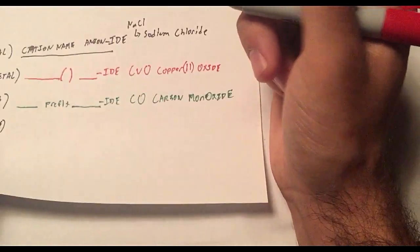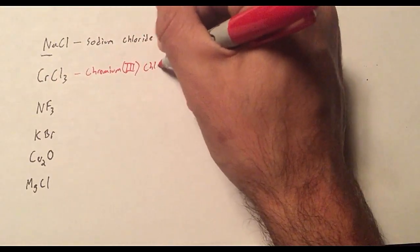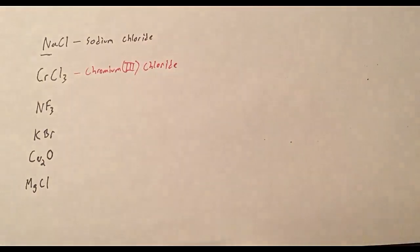then a space, right? And we have the anion chloride with the I-D-E ending. Chromium three chloride.